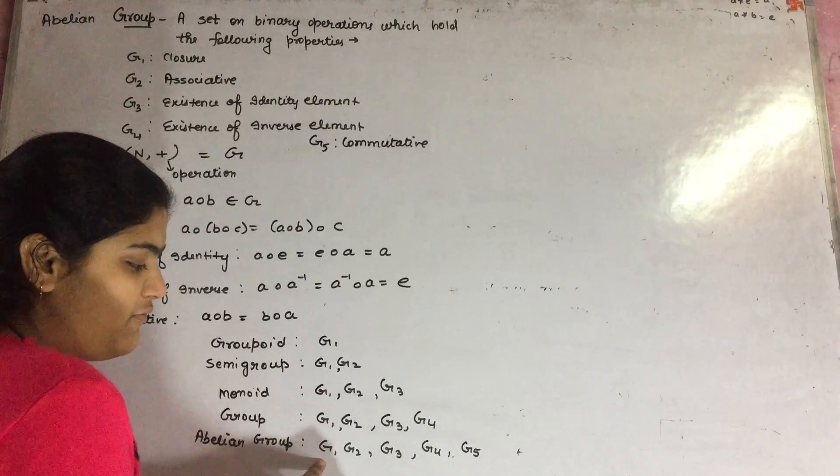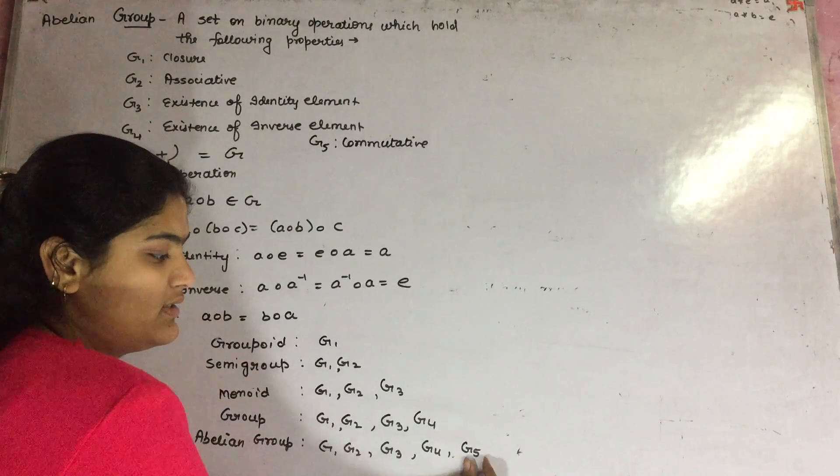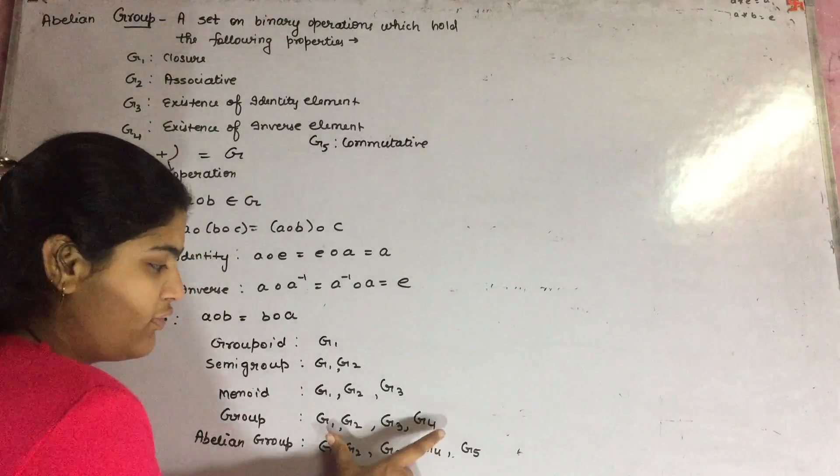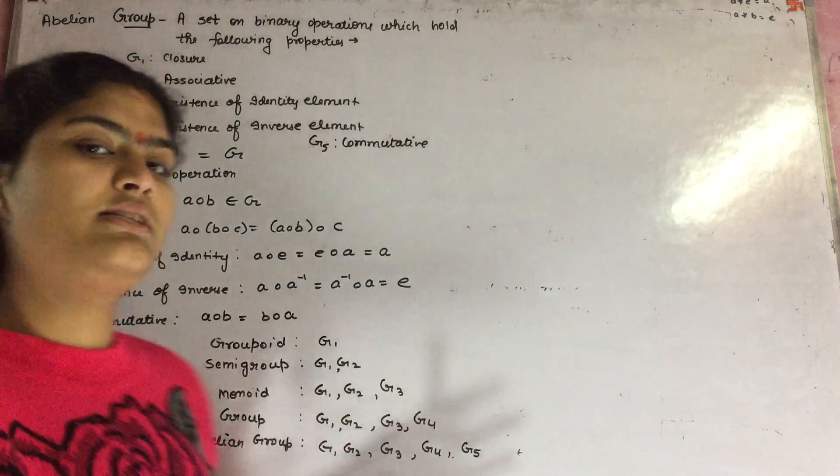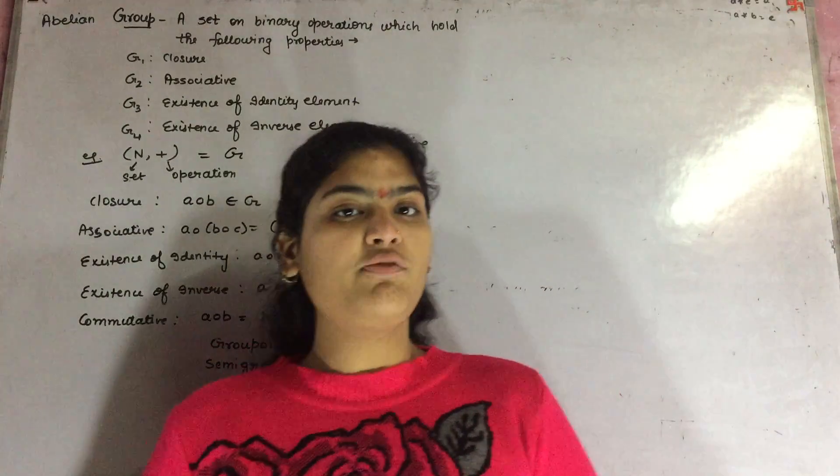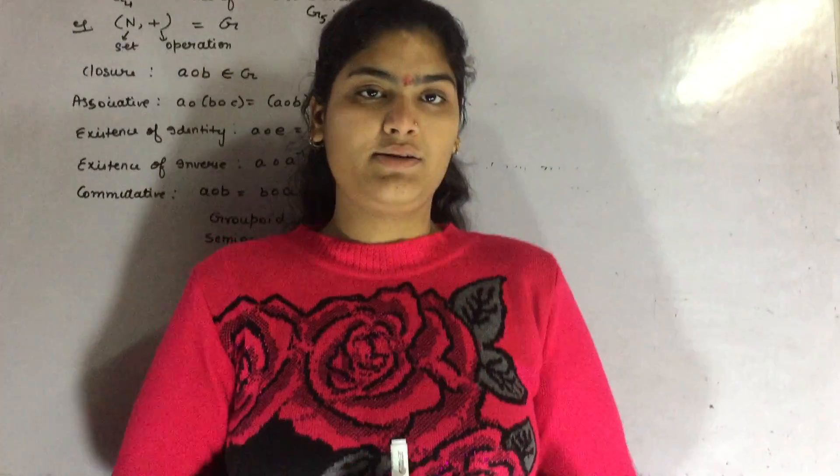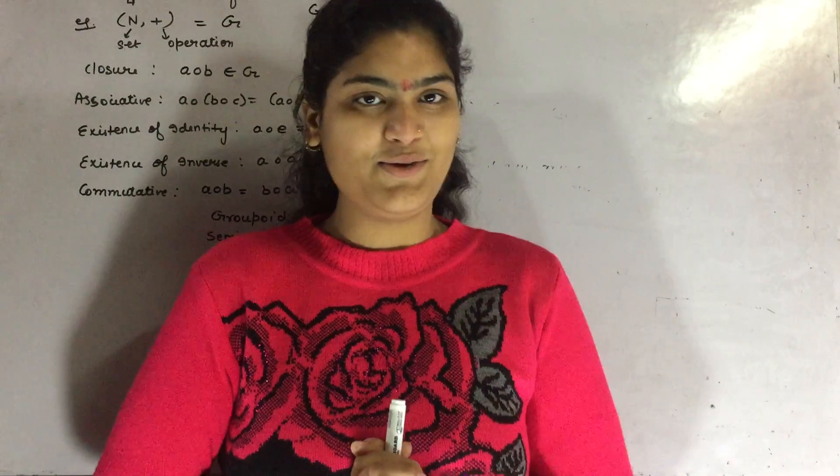A set is said to be an Abelian group if it holds all the five properties. G1 to G4 is a group and with commutative property which is G5. I hope you understand about the Abelian group. Rest of the topic we'll discuss in our next class. Till then keep studying and don't forget to subscribe my channel. Thank you.